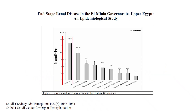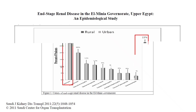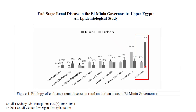Another study done in El-Minya governorate found that about 27% of cases were of unknown etiology, and most of these unknown-etiology cases were in rural areas — consistent with CKDU being more common in rural and agricultural settings.